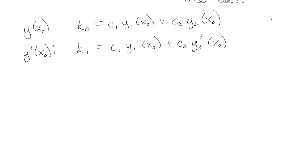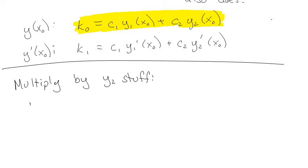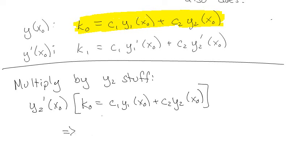And it's c1 y1 at x0 and c2 y2 at x0. And similarly, if I'm going to apply my initial condition for the derivative, that's k1. k1 is equal to c1 y1 prime at x0 plus c2 y2 prime at x0. This is already super duper exciting. For absolutely no reason, except that I'm a sad, lonely mathematician,